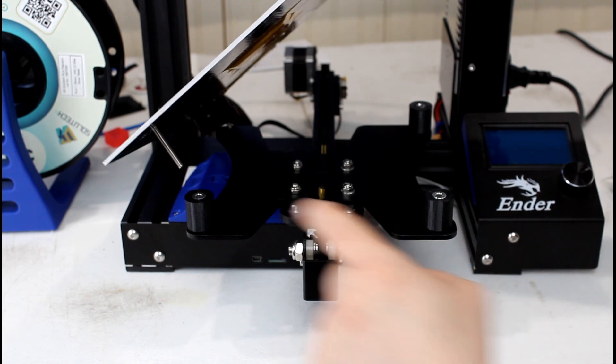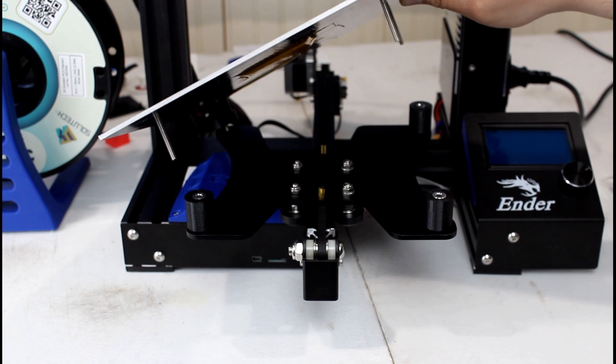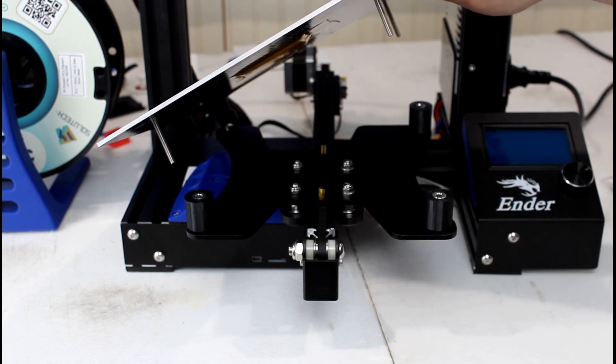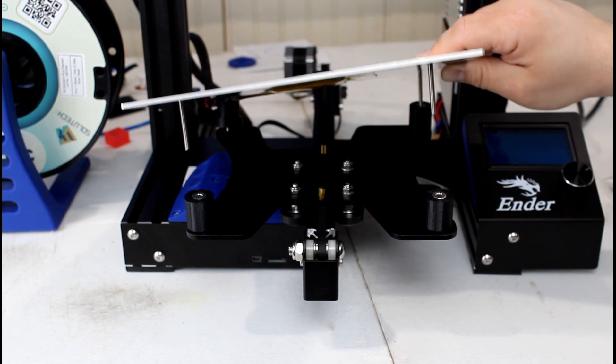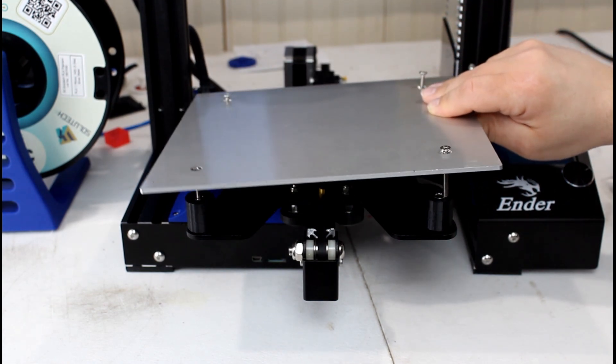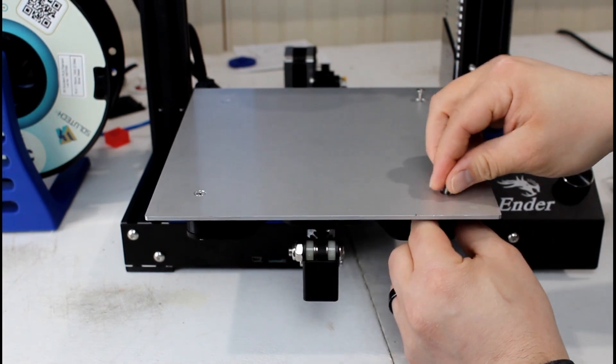So as I mentioned, I use the TH3D solid bed mounts because for my BL touch, so it's the same thing. You want to make sure your mounts are in the right places. Go ahead and lower the screws into them, and it'll fall into the holes when they're ready.